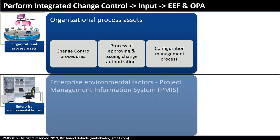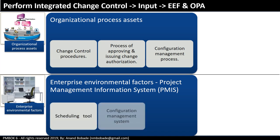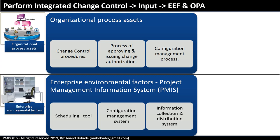Enterprise environmental factors — the most important is the project management information system, which may include a scheduling tool, configuration management system, and information collection and distribution system. A common point of confusion: what is the difference between configuration management process (part of OPA) and configuration management system (part of EEF)? The difference is clear — when you talk about process, it's a methodology, so that is part of OPA. When you talk about tools — your configuration management software, your system — those are at an enterprise or organization level, which is why they are part of enterprise environmental factors.